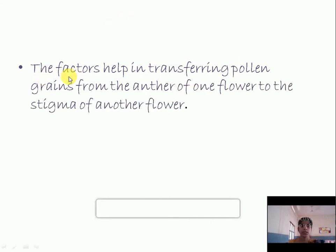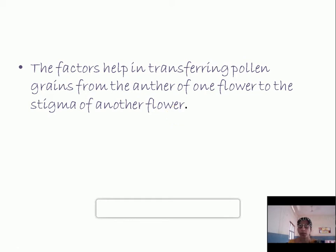Agents of pollination are factors that help in transferring pollen grains from the anther of one flower to the stigma of another flower. These are known as agents of pollination. Pollinating agents are called pollinators.